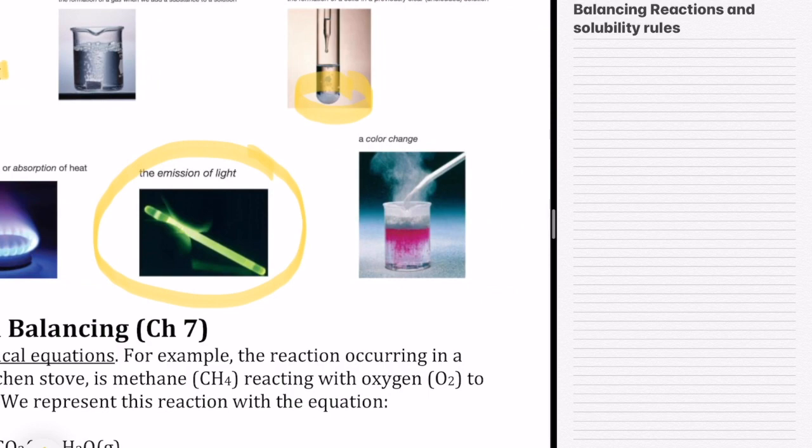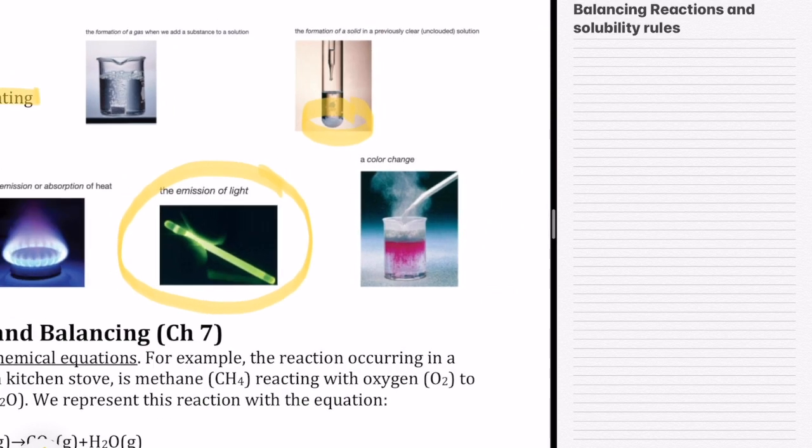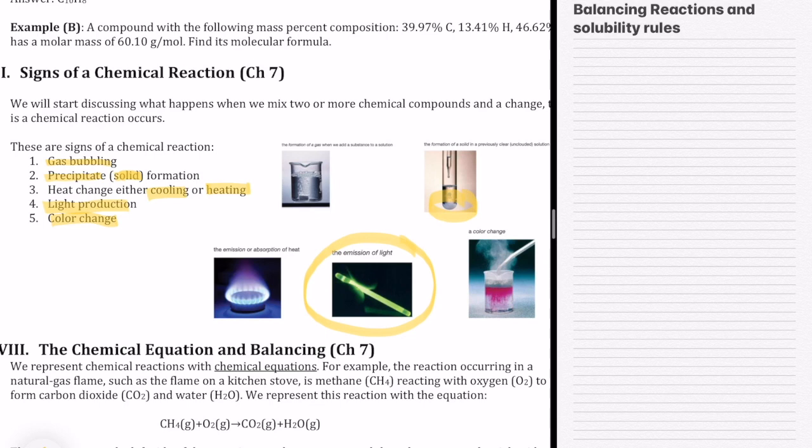Color change is very common. When you mix two things together, the color of that mixture changes into something new. In the lab that goes along with this chapter, you're going to observe various types of reactions and see all these signs of reactions.